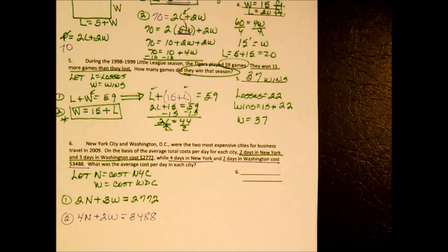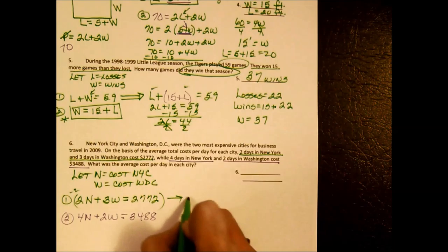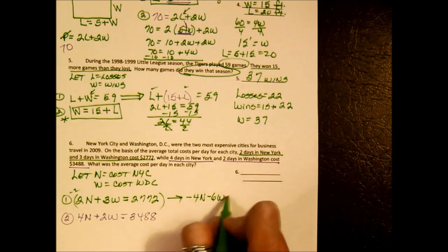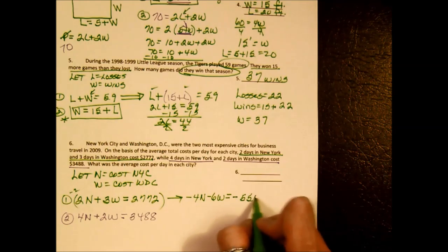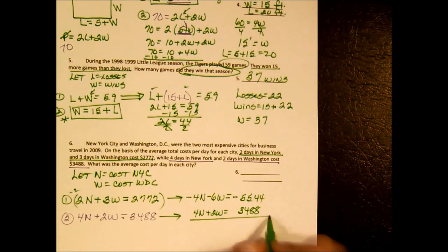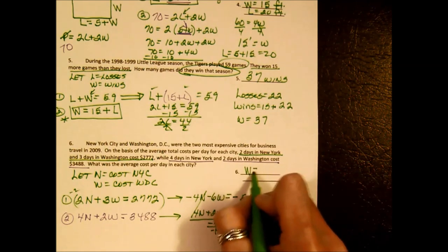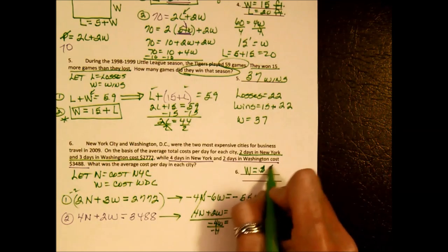This is better solved using the elimination method — I want to eliminate the N's. I'll multiply the first equation by negative 2, giving negative 4N minus 6W equals negative 5,544. The bottom equation doesn't need to be multiplied. Adding the equations, the N's zero out. Negative 4W equals negative 2,056. Dividing both sides by negative 4.